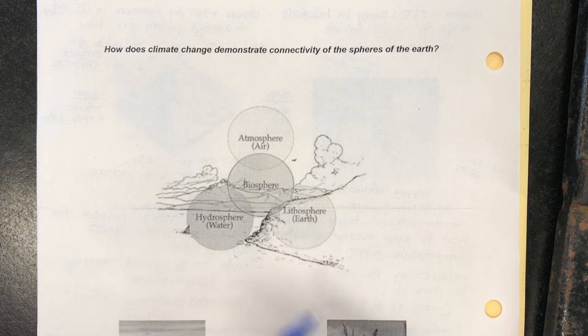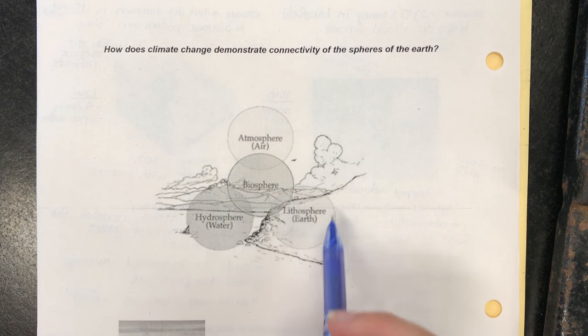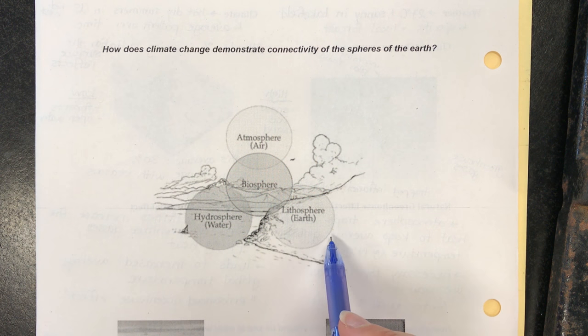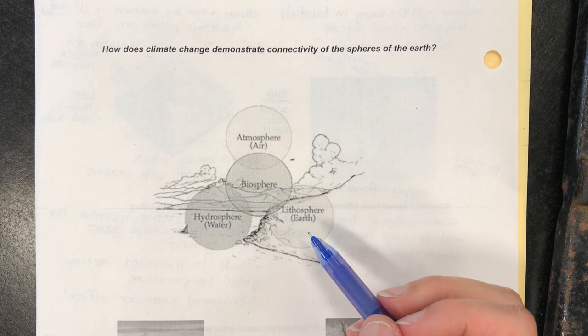We're going to go through and make some notes on this of all the different ways that climate change has affected all of these different spheres, to show how when something happens in one it will affect the others as well. So we'll start with the lithosphere.